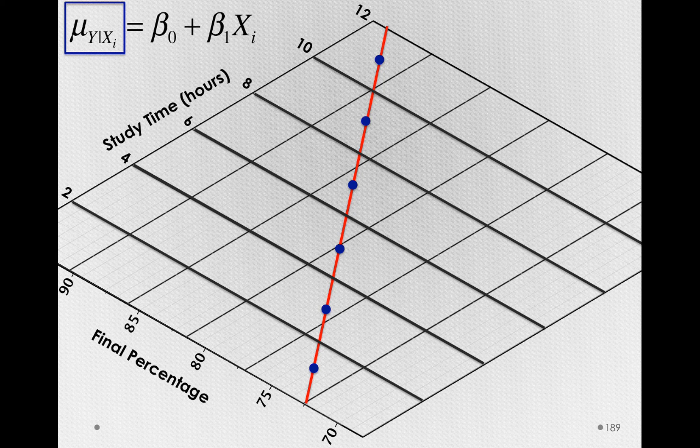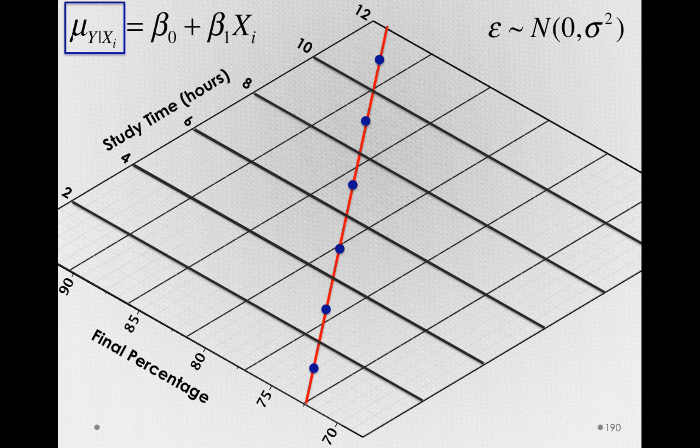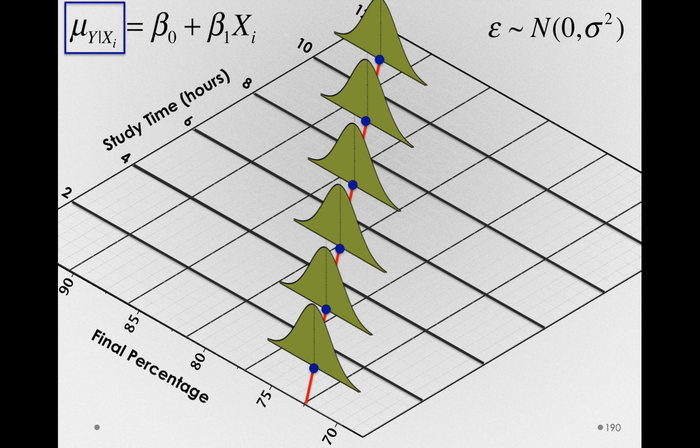Now remember, our general linear model always makes a particular assumption that error, that is, individuals around some group mean, is normally distributed with a mean of 0 and the same variance. So in the population, the way we would see this, are normal distributions around this line.